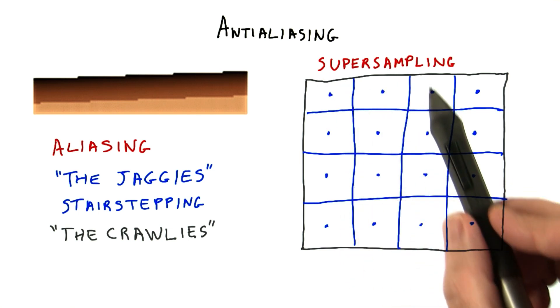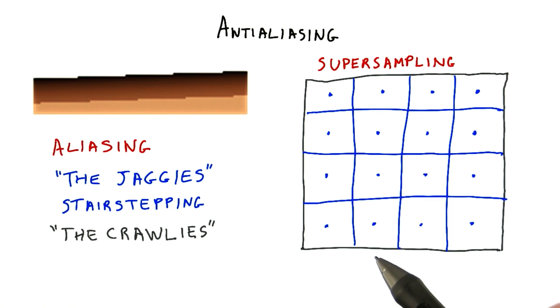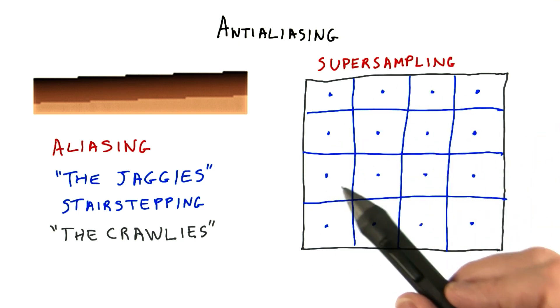On one end of the spectrum is super sampling, where you simply create a higher resolution image and then use all these extra samples to make the final image. For example, for a 1,000 by 1,000 pixel image, you might render it at a resolution of 4,000 by 4,000. Now each pixel has 16 pixels associated with it in the high-res image. Blend these together and you get a better result.